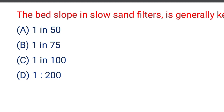Next question: the bed slope in the slow sand filter is generally kept at — option A 1 in 50, option B 1 in 75, option C 1 in 100, option D 1 in 200. The correct answer is option C, 1 in 100.